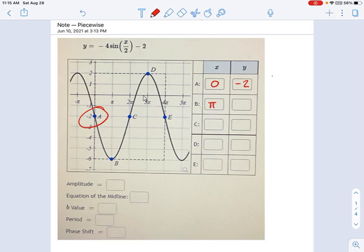For this next one, B is at x equals π, y equals negative 6. C equals x equals 2π, y equals negative 2, and so on.